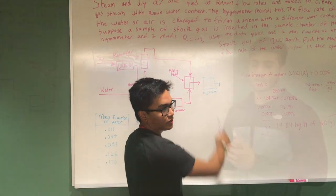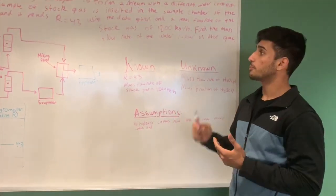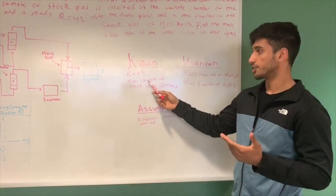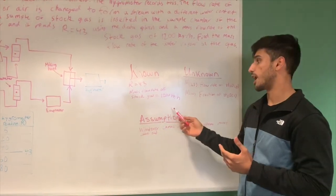We're going to be talking about our knowns, unknowns, and assumptions. From the problem we're given the hygrometer reading r equals 43 and the mass flow rate of the stock gas which is 1200 kg per hour.